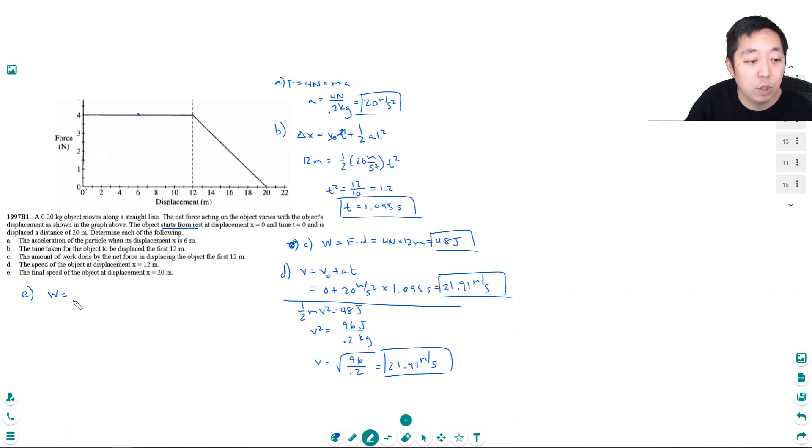So, the work done, the total work done from start to finish is the 48 joules that it did here, this area, plus this area, which is, this is 8 meters, times this height, is the area of a triangle, times 4 newtons, times 1 half. 1 half base times height, right? So that's 32 times 1 half, that's 16. 48 plus 16 is 64 joules.